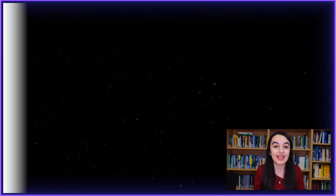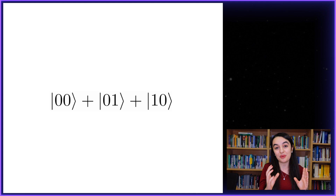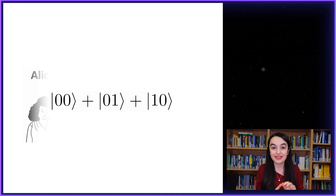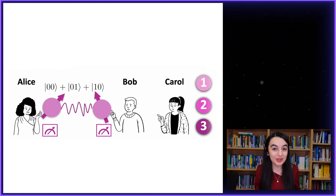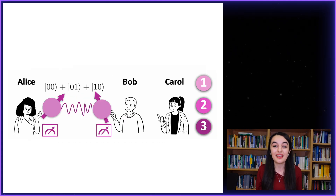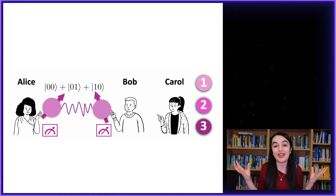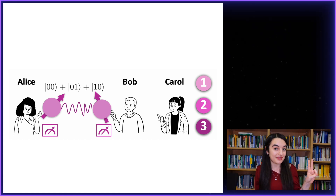Let's play a game of two quantum truths and a lie. Imagine I have two entangled qubits in a joint state and I give one to Alice and one to Bob. Then Carol tells us three statements about the outcomes that Alice and Bob will get when they measure their qubits. Two of these are true and one is a lie. I'm going to use my quantum lie detector to check each of Carol's statements.